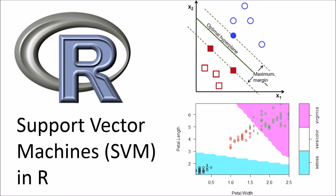Welcome to another episode of Machine Learning Using R. In today's video we're going to look at support vector machines (SVM). The agenda covers a brief overview of what SVMs are, the concepts and background behind the algorithm, how it works at a high level, some key terms, and finally a few examples and demos using R to perform SVM-based algorithms.